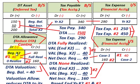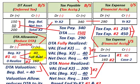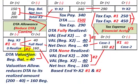In our example, at the beginning of year X2, we're going to have a credit of $40,000 in our deferred tax asset allowance account, which is reducing our deferred tax asset. So the deferred tax valuation account has a beginning balance of $40,000. This account is reducing the deferred tax asset to its realized amount.